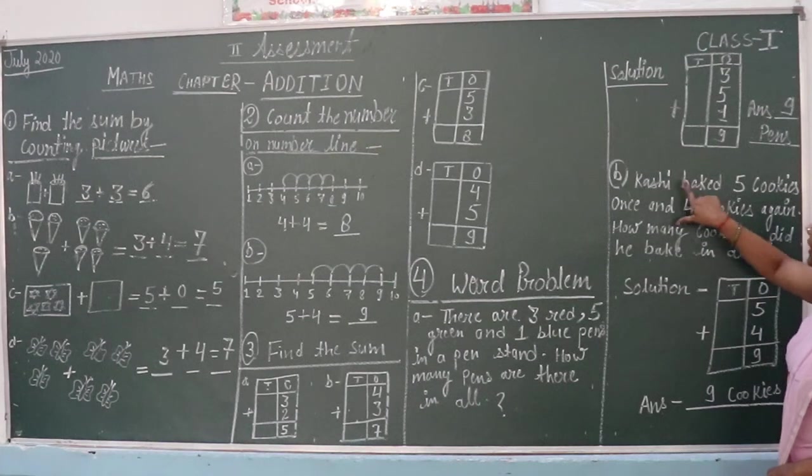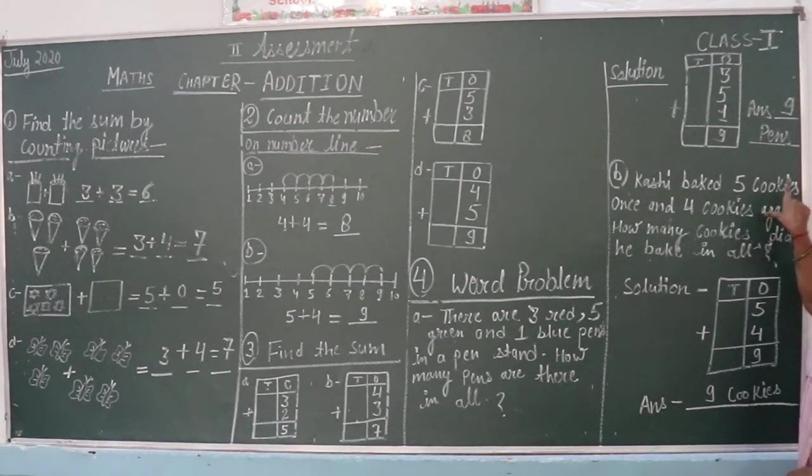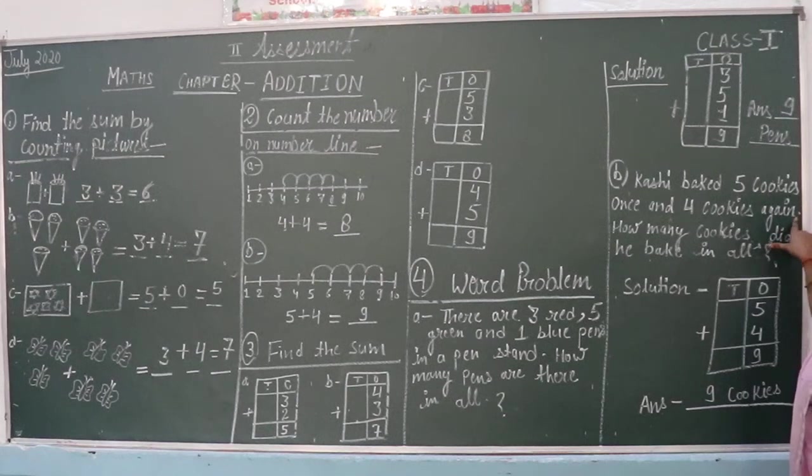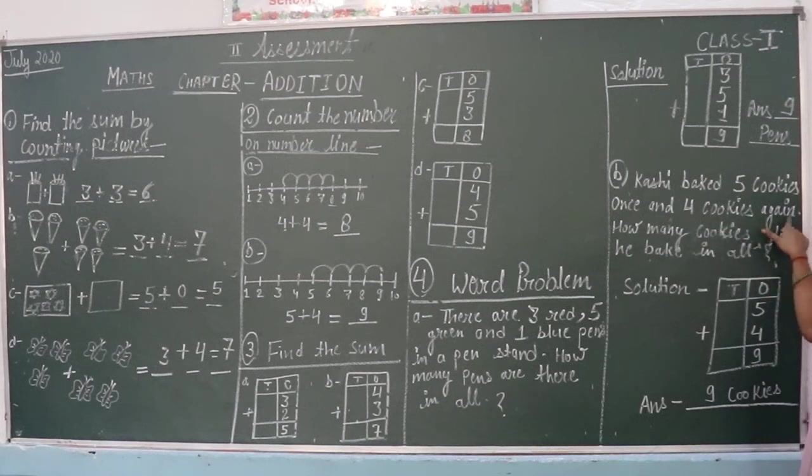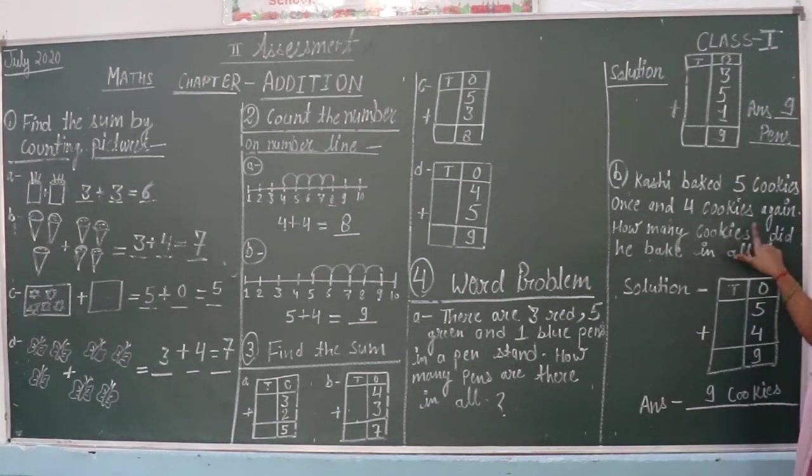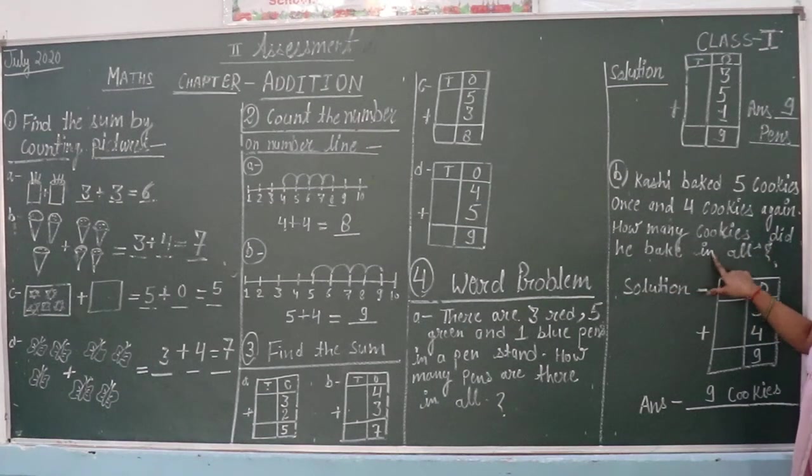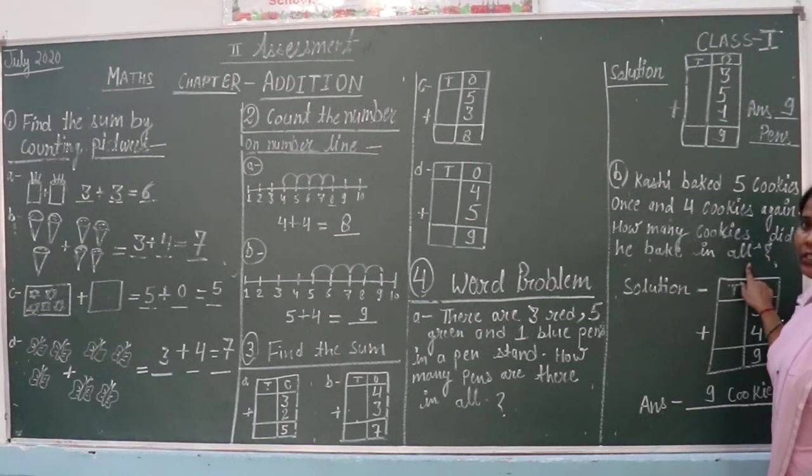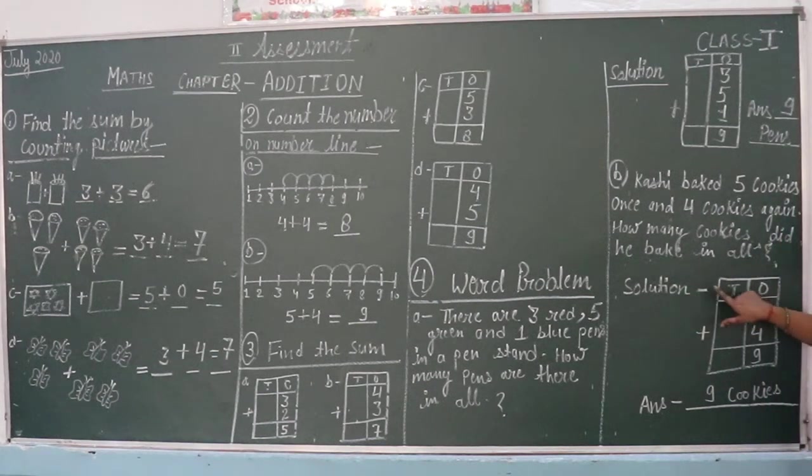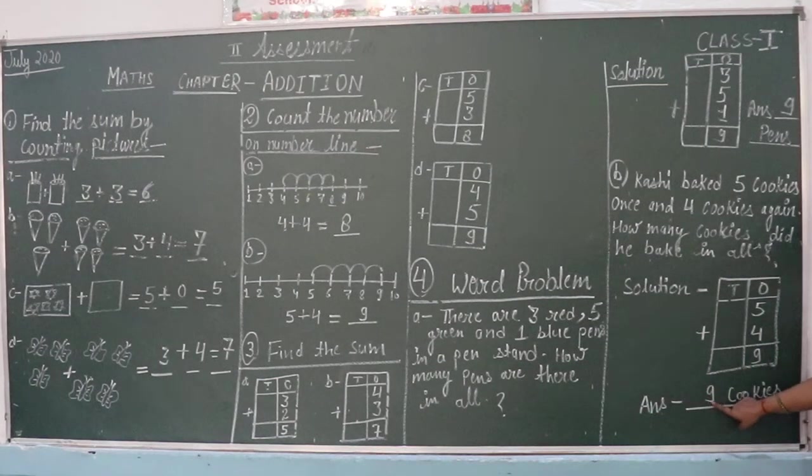B question. Tasi bake 5 cookies once and 4 cookies again. How many cookies did he bake in all? Solution: 10s, 1s. 5 plus 4 is equal to 9. Answer 9 cookies.